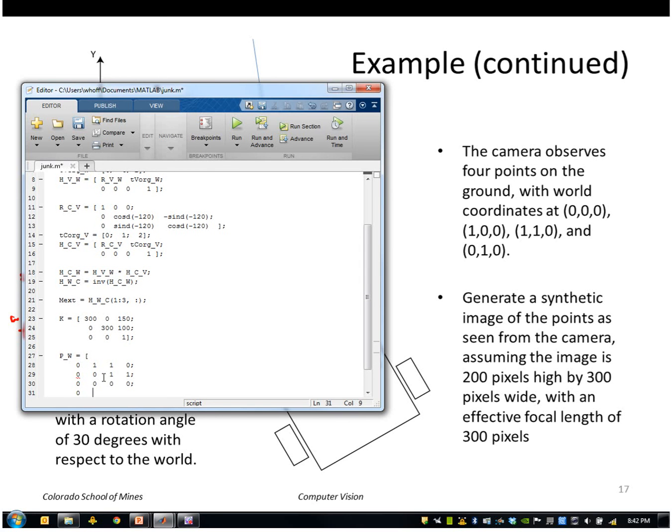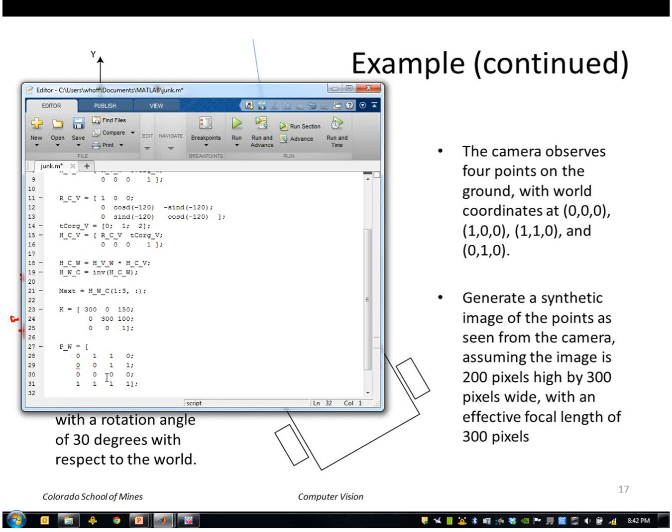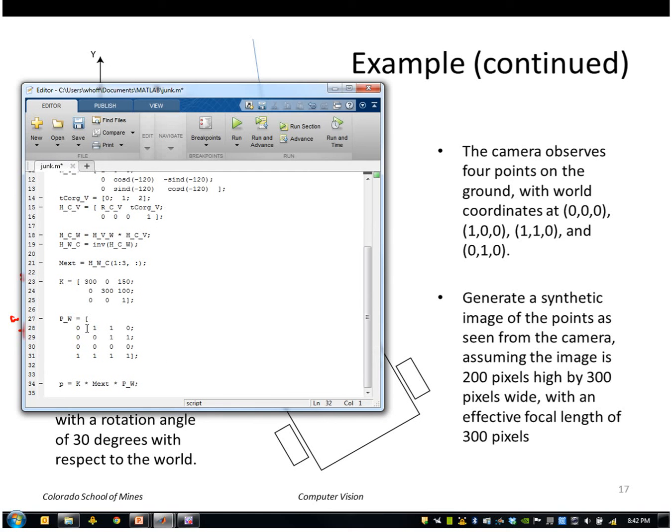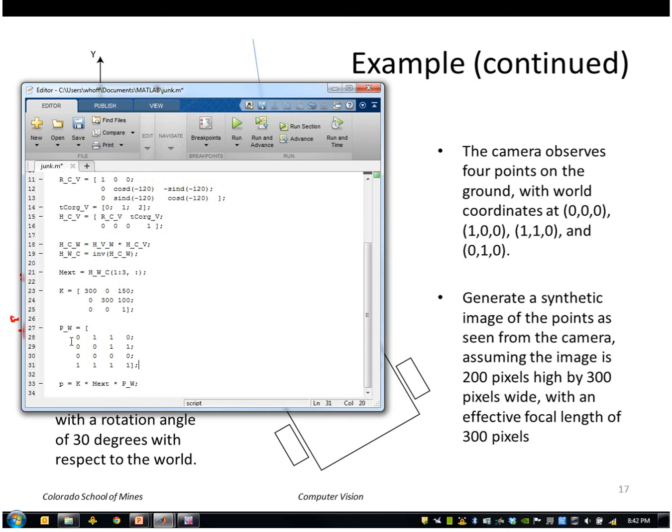and 0,1,0. And then the last row, the fourth element of every point is a 1 because they're homogeneous points. So every column here represents a 3D point. So if I multiply this times Pw, it will transform all the points.